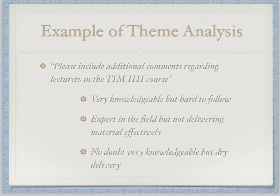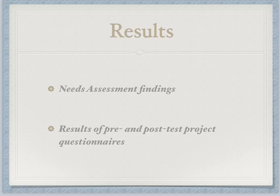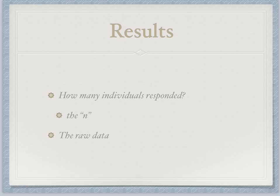Now that you've looked at it this way, the next step would be to interpret your data, then asking the question: why is this so? And then searching for solutions. You look at your results — in the past you've looked at your results from the needs assessment findings, and now you're going to be looking at your results from your pre- and post-test project questionnaires. Things to keep in mind: how many individuals responded — this is what we call the N. Just as you're looking at everything and putting it all in a table, you're looking at everything in what's called the raw data.